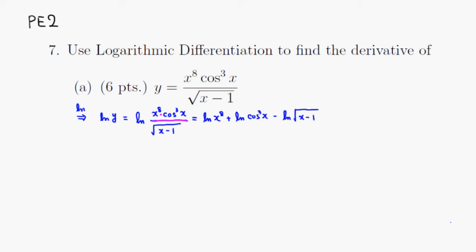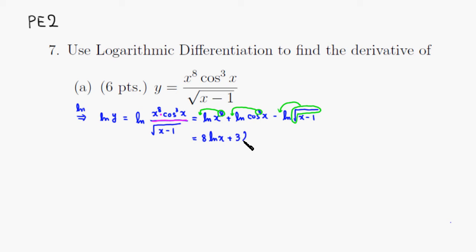Another log property allows us to move the power — if you have a power, you can place it in front. So the cube gives us a 3 in front. Here we have a square root, which is a one-half power, so one-half goes in front of the natural log. This simplifies to: 8 times the natural log of x, plus 3 times the natural log of cosine of x.